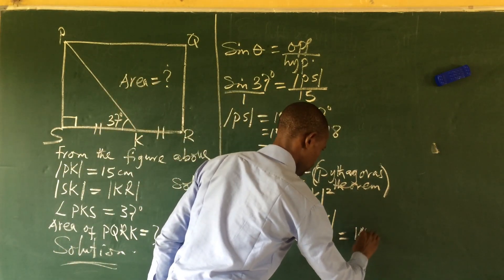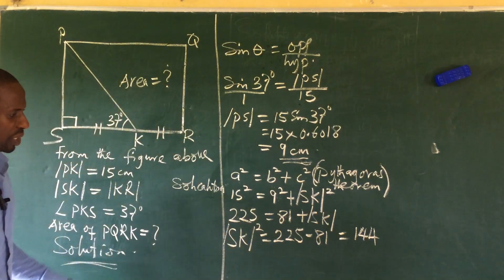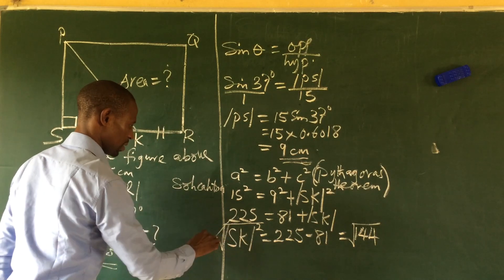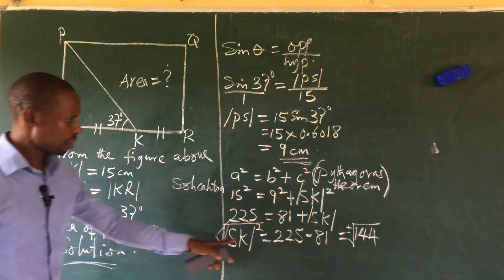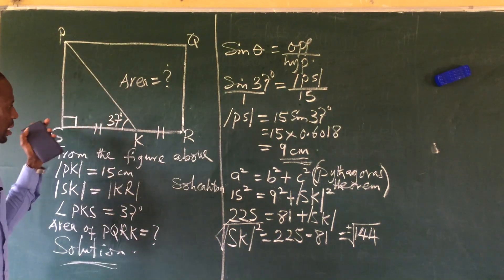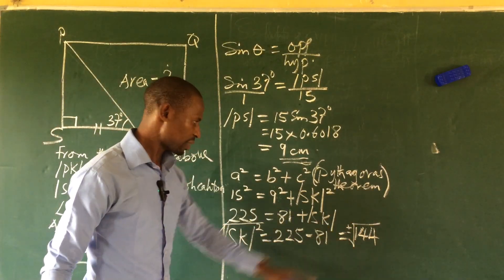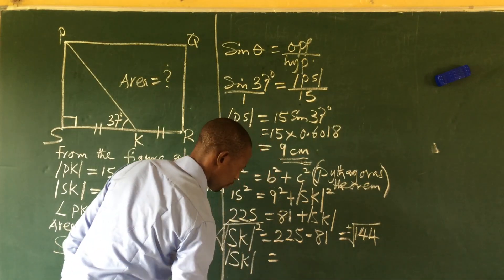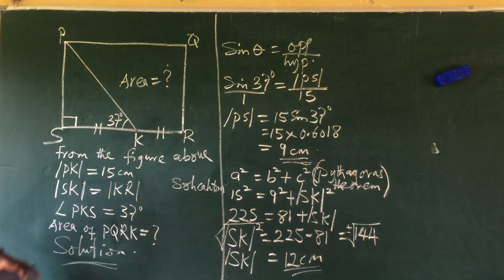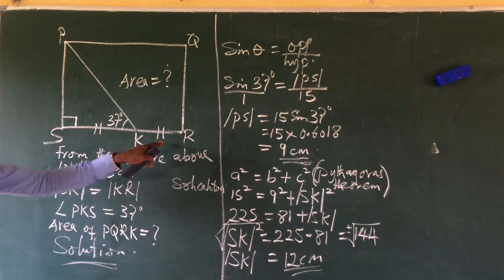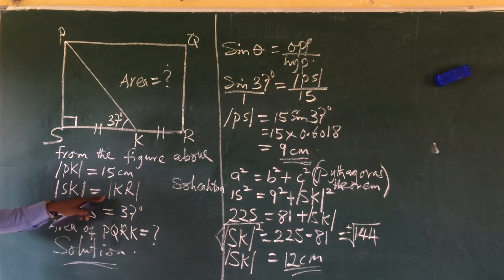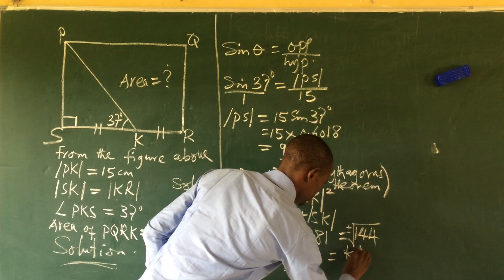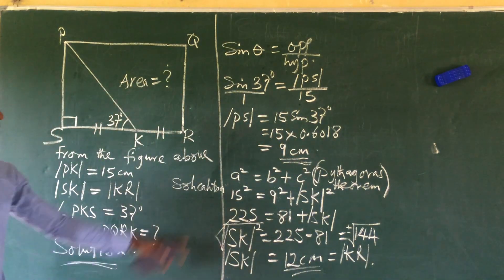Making SK the subject of the formula, we have 225 minus 81, which gives us 144. We take the square root of both sides. Because we are dealing with length, we ignore the negative sign. So SK equals the square root of 144, which gives us 12 cm. Mind you, SK is equal to KR, so our KR is still the same thing, which equals 12 cm.